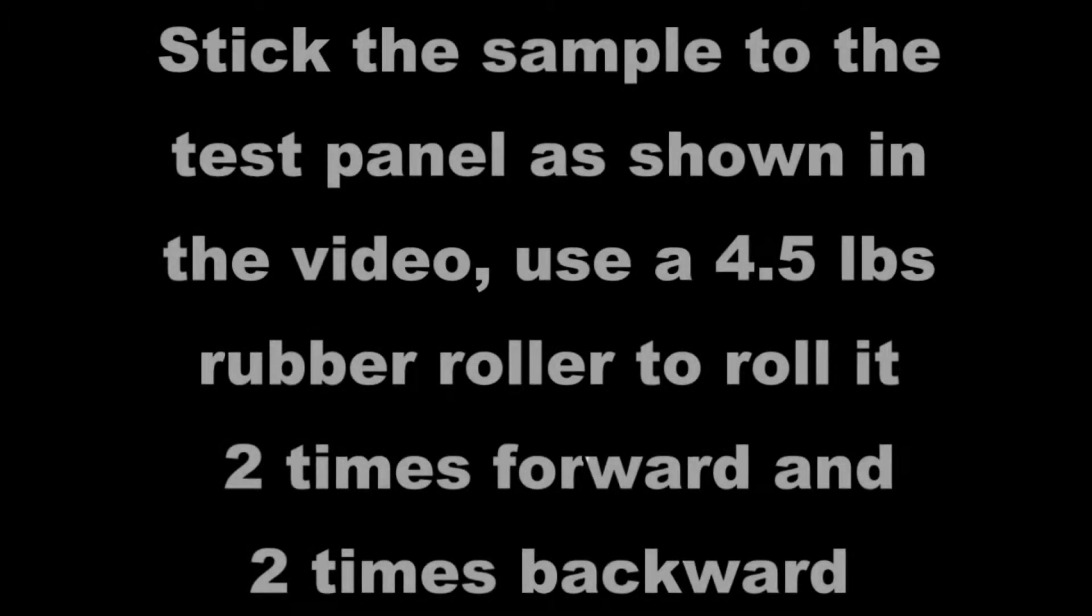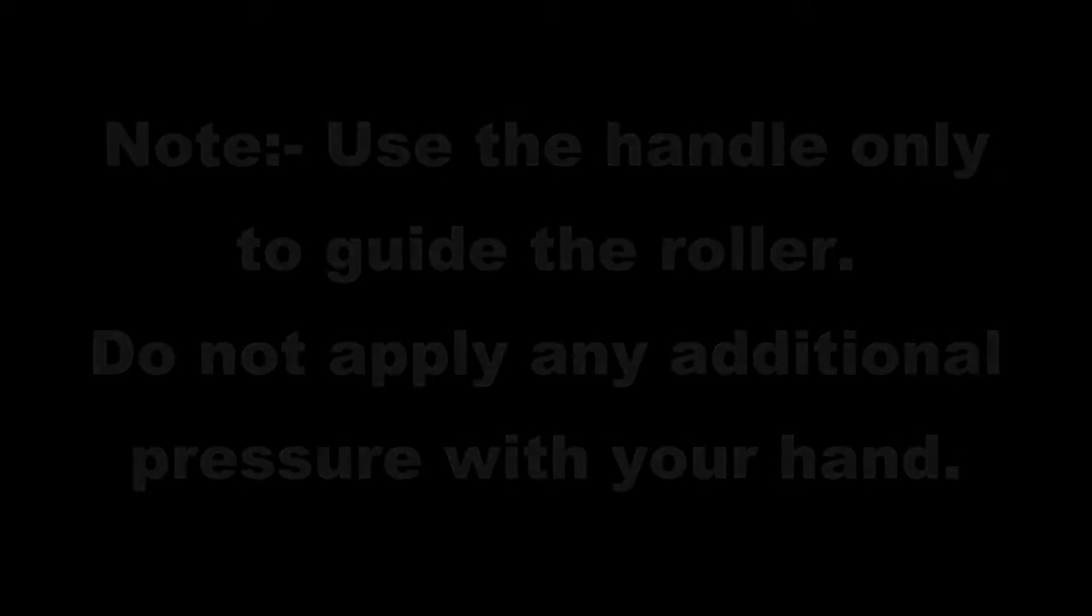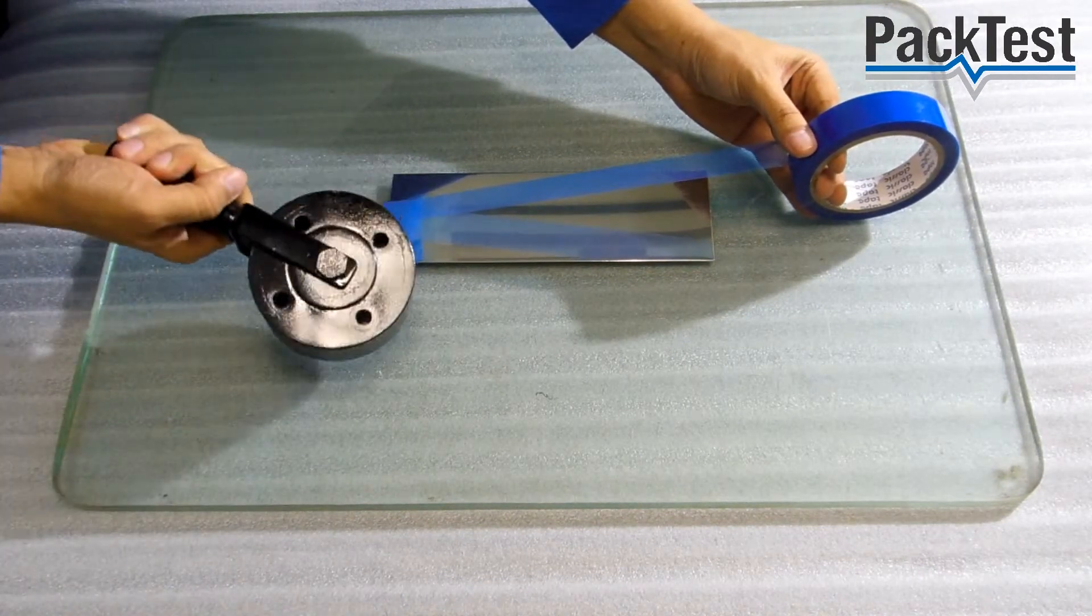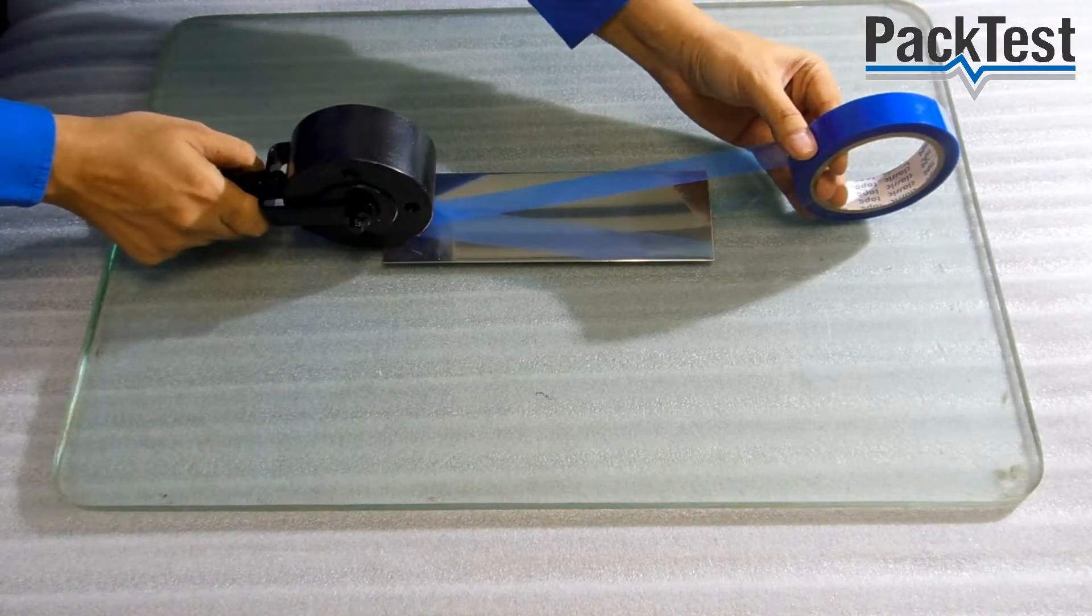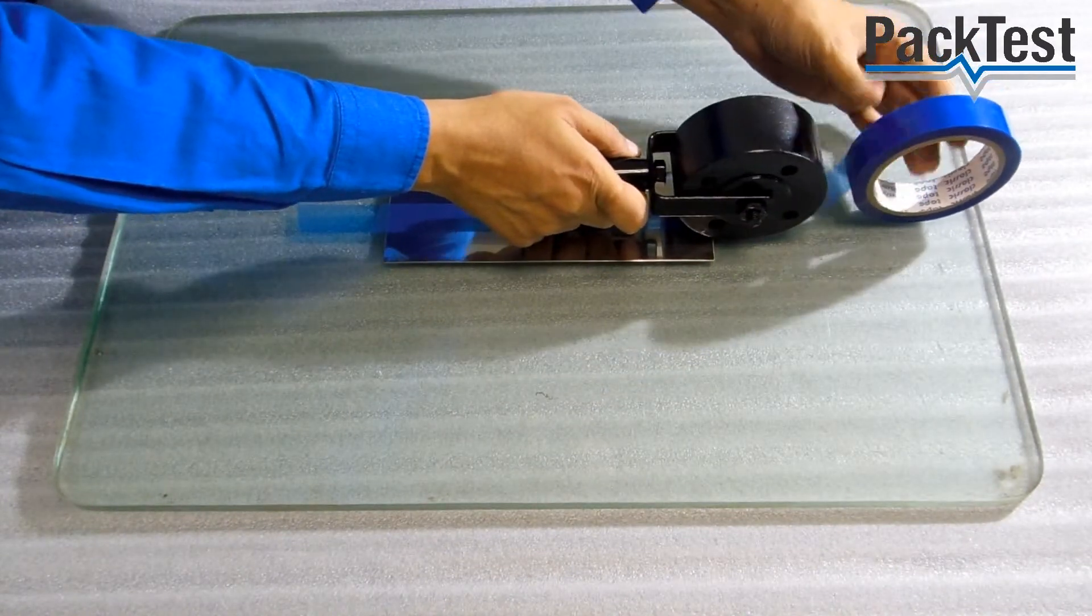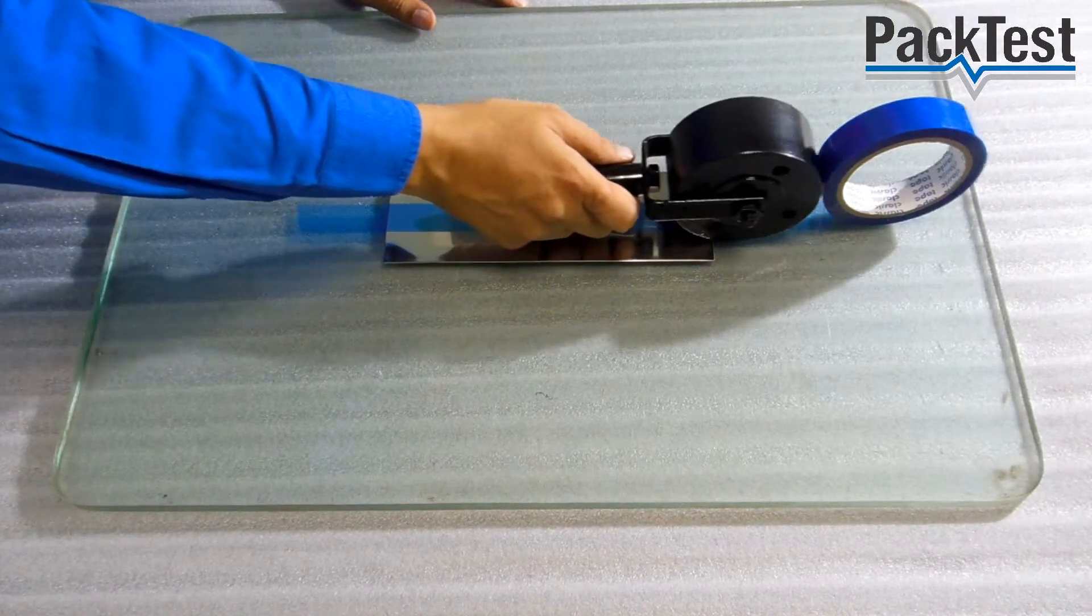Clean the test panel thoroughly with suitable solvent and let it dry completely. Stick the sample to the test panel as shown in the video. Use a 4.5 pounds rubber roller to roll it 2 times forward and 2 times backward. Note, use the handle only to guide the roller. Do not apply any additional pressure with your hand. Repeat the rolling action 4 times.